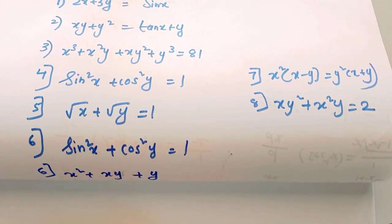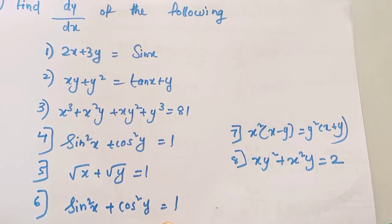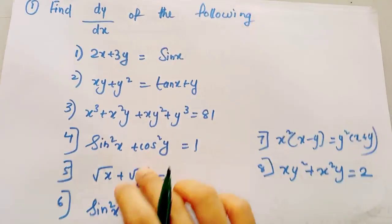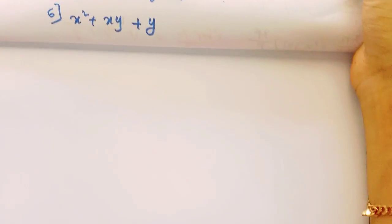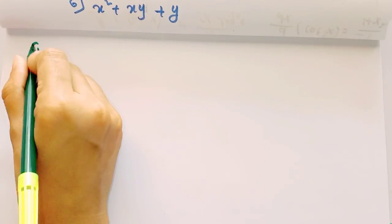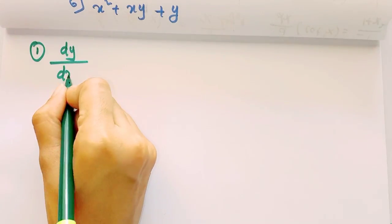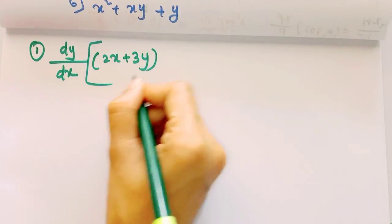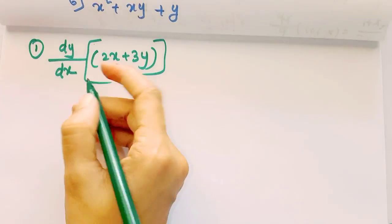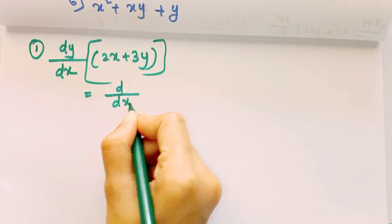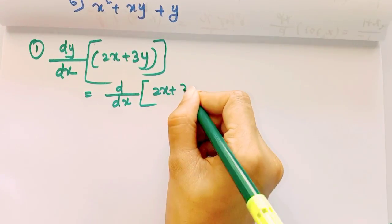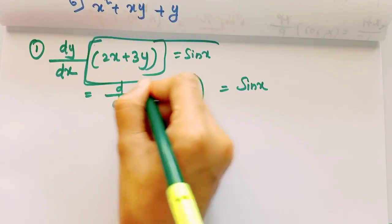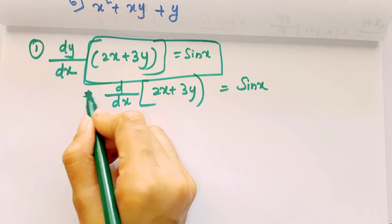I am going to show you the questions. Find dy by dx of the following. We will work through derivative questions. First, we have to find dy by dx. The equation is 2x plus 3y equal to sin x. This is the derivative question we need to solve.